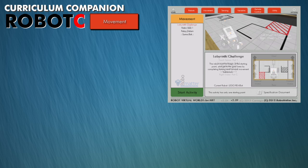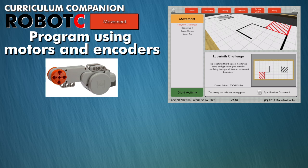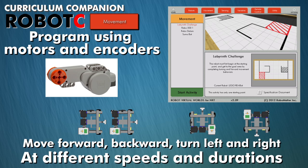The Movement section gives students the opportunity to learn how to program using the motors and encoders on their robots. They will program their robots to move forward, backward, turn left and right at different speeds and durations.